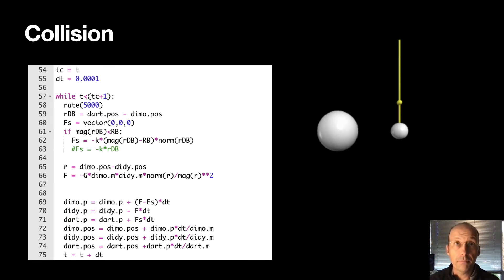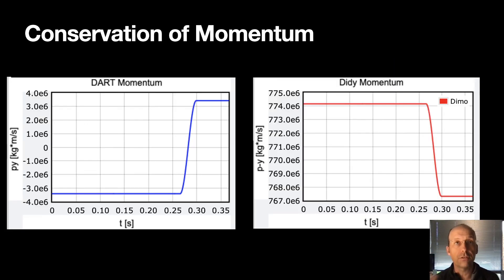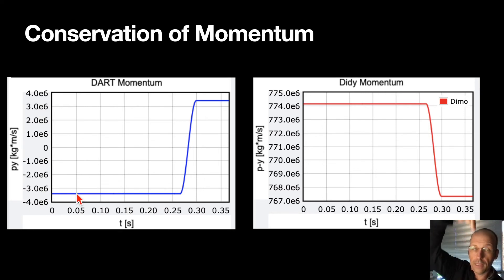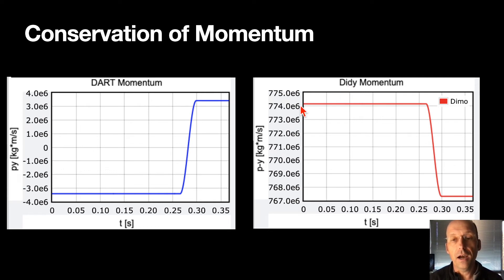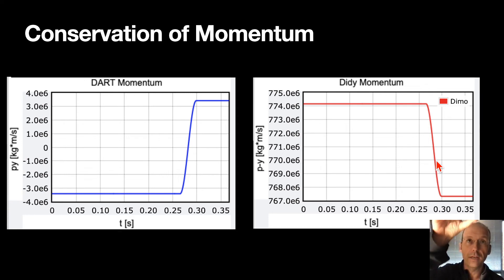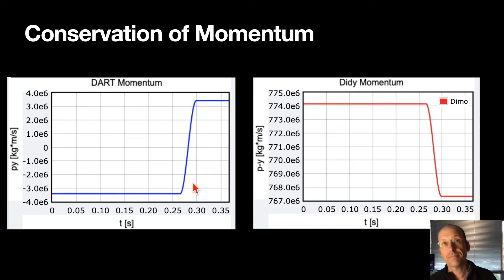Let's look at the momentum of Dimorphos and DART before and after the collision. DART starts off moving in the negative y-direction; then there's a collision and its momentum increases, and it ends up moving in the positive y-direction. Dimorphos has a much larger momentum and was already moving upward, but then it slows down just a little bit. The change in momentum for DART is the same magnitude as the change in momentum for Dimorphos — because it's the same collision.